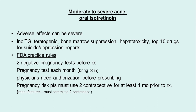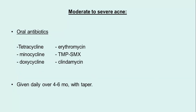FDA practice requires two negative pregnancy tests before starting isotretinoin; pregnancy tests each month. Physicians need authorization before prescribing. Pregnancy risk patients must use two contraceptives for at least one month prior to treatment. Oral antibiotics: tetracycline, minocycline, doxycycline, erythromycin, sulfamethoxazole-trimethoprim, co-trimoxazole, clindamycin — given daily over four to six months with tapering dosage.